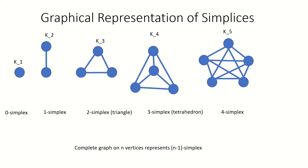For example, the complete graph on three vertices represents the vertices and edges of a two-dimensional simplex. We could represent the vertices of a four-dimensional simplex by a complete graph on five vertices.